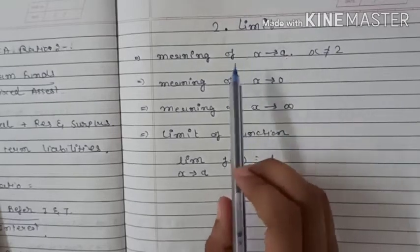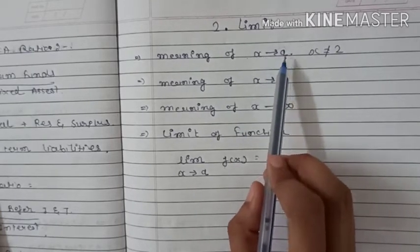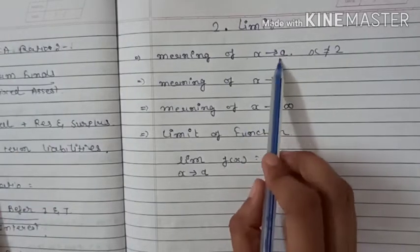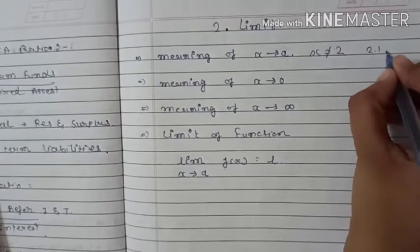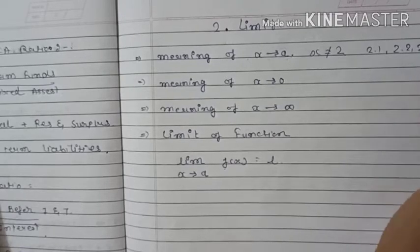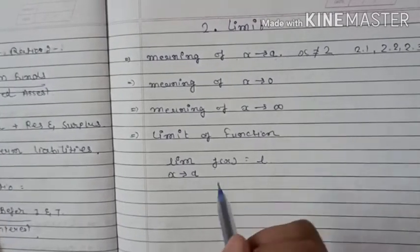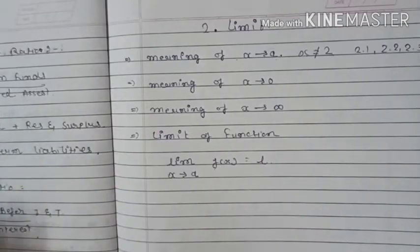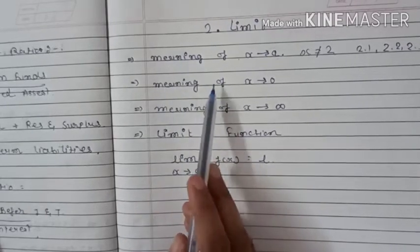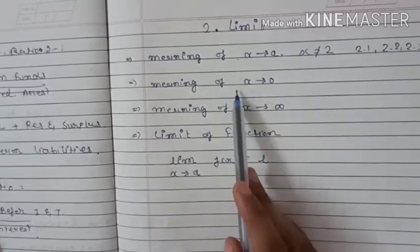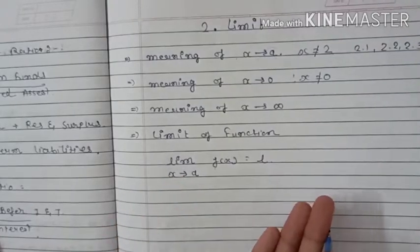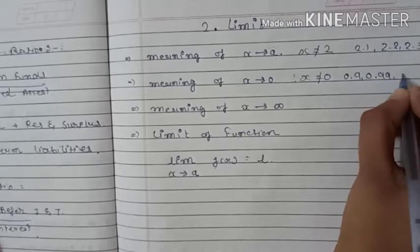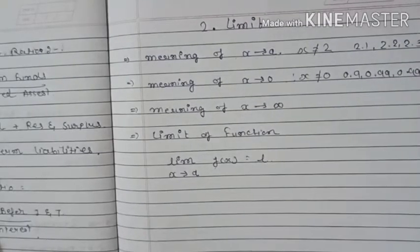What do you mean by x tends to a? It means the value of x is nearest to a. Just like if a = 2, the nearest values would be 2.1, 2.2, 2.3, etc. So in a limit, a boundary is created by the function and we get a definite answer. The next definition is the meaning of x tends to 0. x tends to 0 does not mean x equals 0. It means nearest to 0, that means 0.9, 0.99, 0.999.